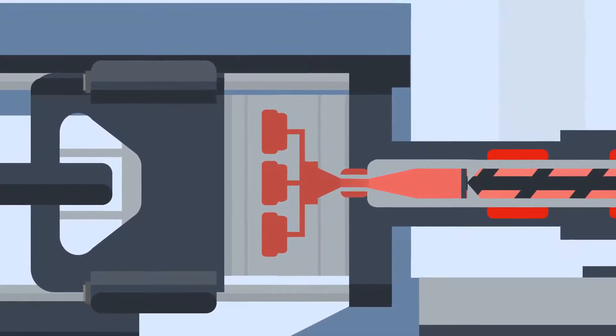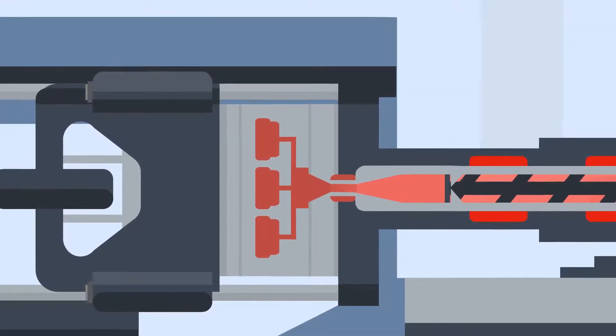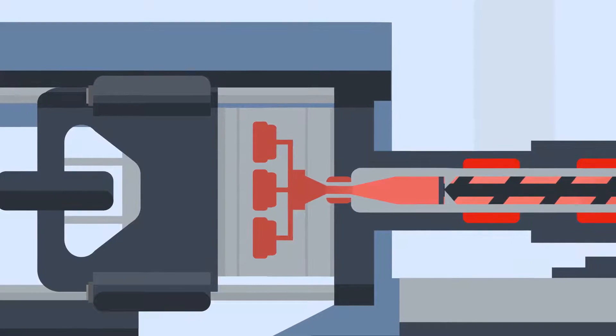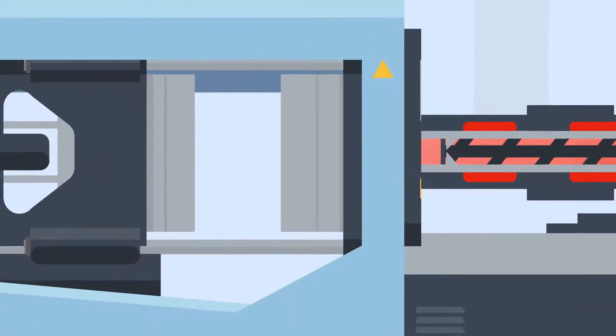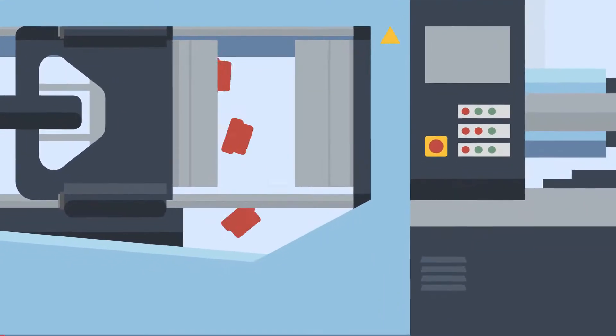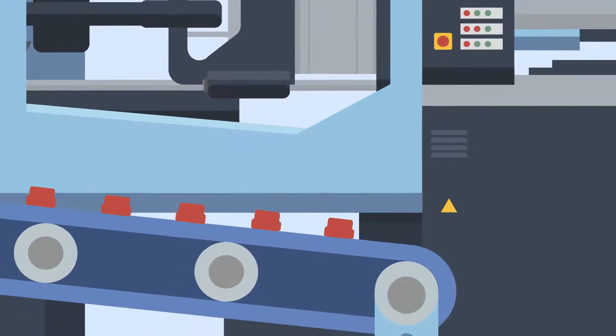After a set holding time, the screw will screw back to its set point. This happens at the same time as the cooling phase of the cycle. Once the set cooling time has passed, the mould opens and ejector pins or plates push the new parts out of the tool. These then fall onto a conveyor belt ready to be finished and packed.